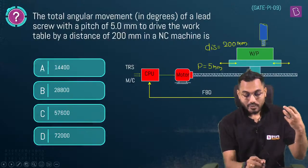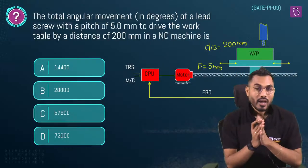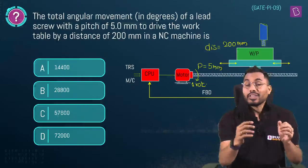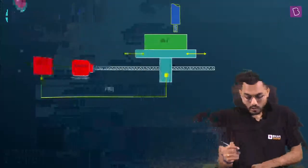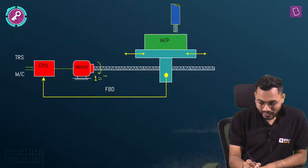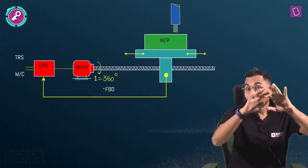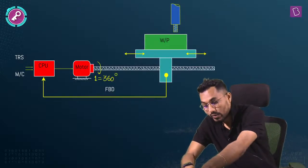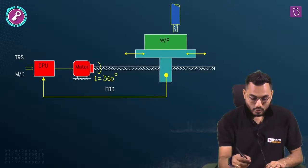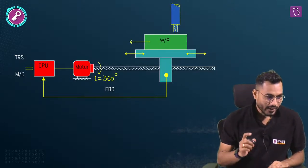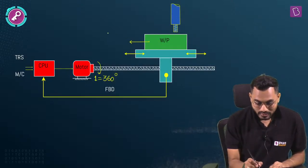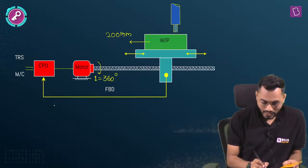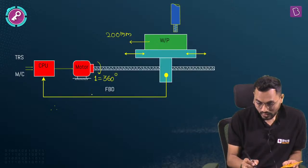One rotation of the motor generates 360 degrees of angular movement. To calculate total angular movement, first find how many rotations are required to travel 200 mm. Since lead = n × pitch, and number of starts = 1, lead = 5 mm. So in one rotation the work table travels 5 mm.